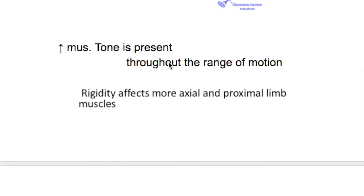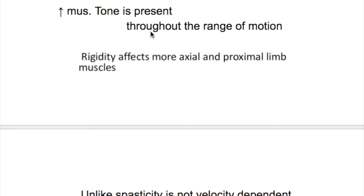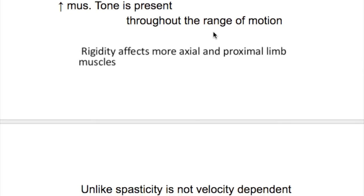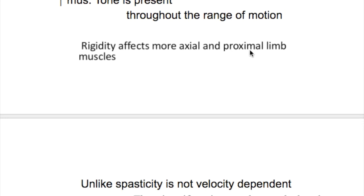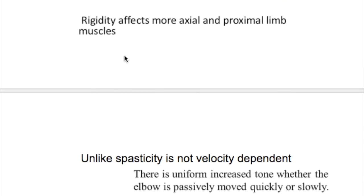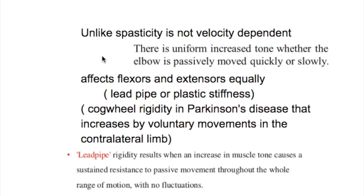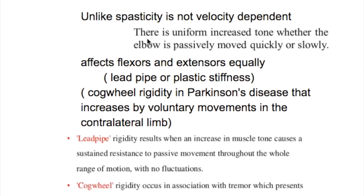The features of rigidity include: increased muscle tone present throughout the range of motion; rigidity affects more axial and proximal limb muscles compared to spasticity, which affects the distal muscles. Unlike spasticity, rigidity is not velocity dependent, meaning there is a uniform increase in tone whether the elbow is passively moved quickly or slowly.